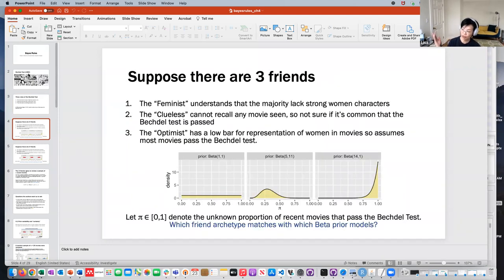And then, suppose we know that there are three friends of different types. There's a feminist who understands the majority of strong women characters, clueless who cannot recall any movie scene, and the optimist who thinks that there is good representation in most movies. So most would pass the Bethdel test. If we let pi take on a value somewhere between zero and one, and it denotes a known proportion of recent movies that passed the Bethdel test, which kind of friend do you think matches to which kind of beta prior models?